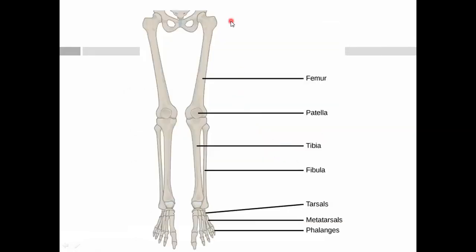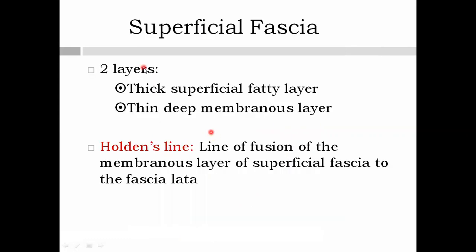Next, the bones of the lower limb: the femur is the bone of the thigh, and the bones of the leg are the tibia and fibula, of which tibia is present medially and fibula laterally. Next we have the superficial fascia. The superficial fascia of the thigh is divided into two layers: the thick superficial fatty layer and the thin deep membranous layer.